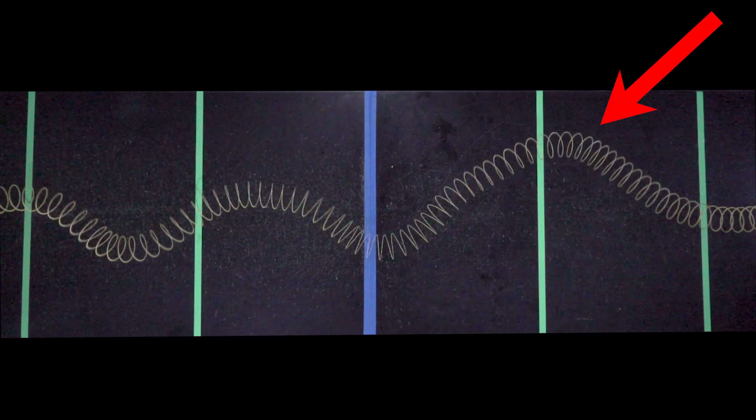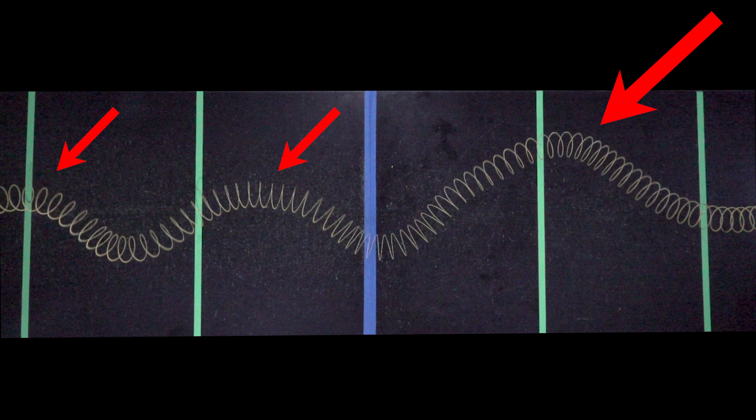Let's look at some high-speed video to see if we can find out. We will send one large pulse from the right down the spring and two small pulses from the left and see what happens when they meet in the middle.